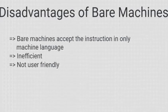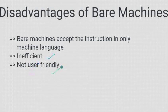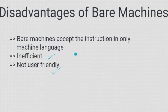Bare machine के disadvantages: It is very inefficient — जहाँ कोई protection नहीं है, कोई security नहीं है, कोई भी process किसी के भी data को access कर सकता है। It is not very user friendly — सारा काम user को करना है, कोई भी पहले से बने हुए constructs नहीं मिलेंगे, सारी coding और functionalities user को ही perform करनी पड़ेगी। Next — bare machine accepts instructions in only machine language, so you need complete knowledge about machine language to operate it.